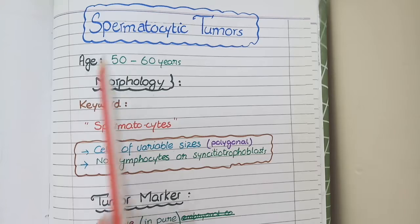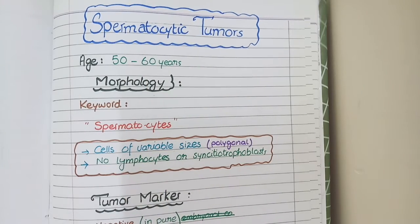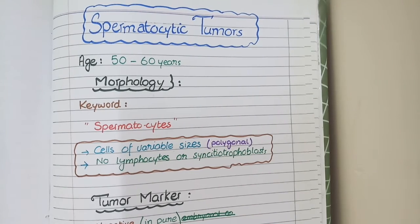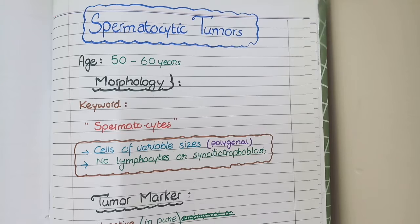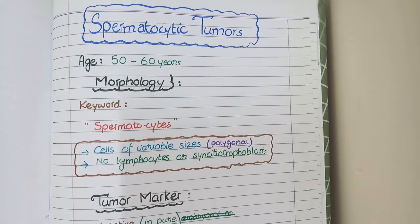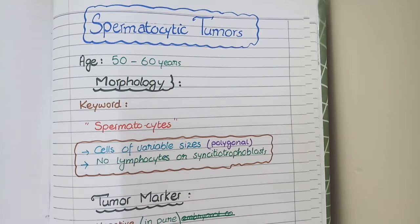Now we will discuss spermatocytic tumors. Previously known as spermatocytic seminomas, they are no longer called that because their clinical behavior is not like that of seminomas — instead, it is similar to non-seminomatous tumors. Unlike other testicular tumors that occur at a young age, spermatocytic tumors occur at a relatively older age of 50 to 60 years, making them an exception.